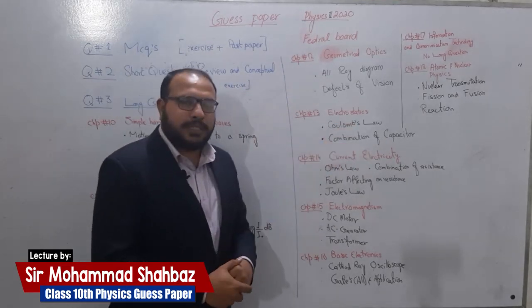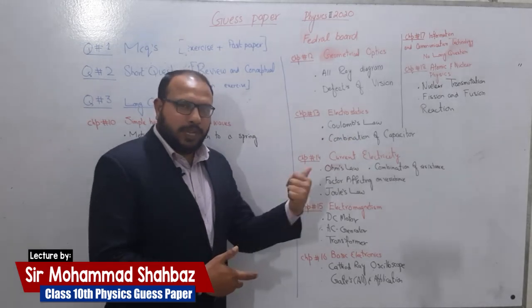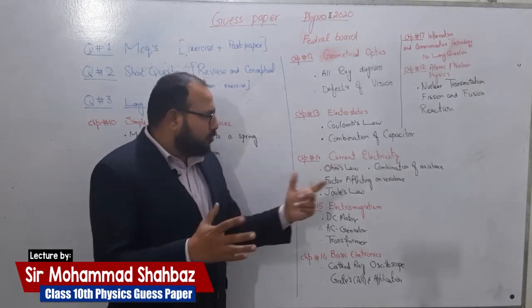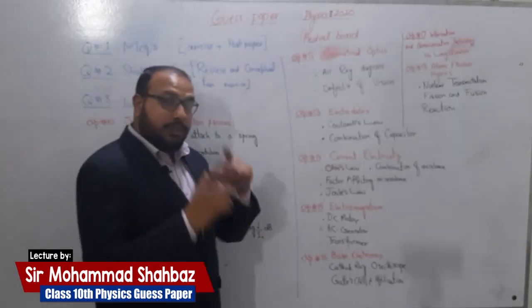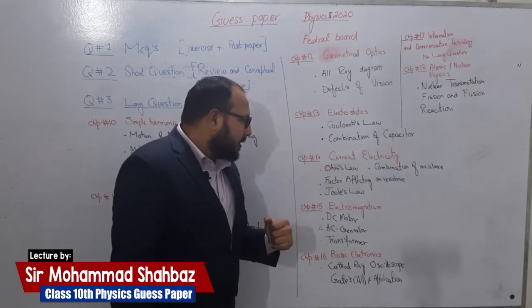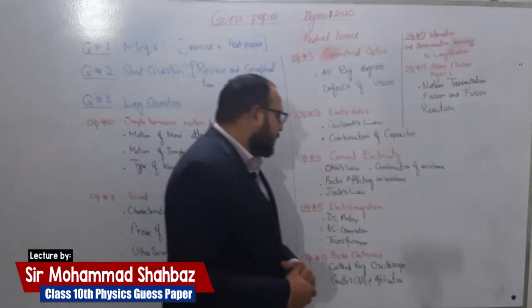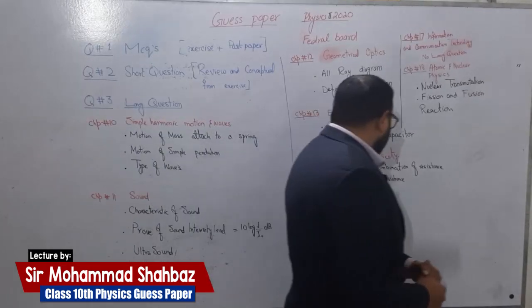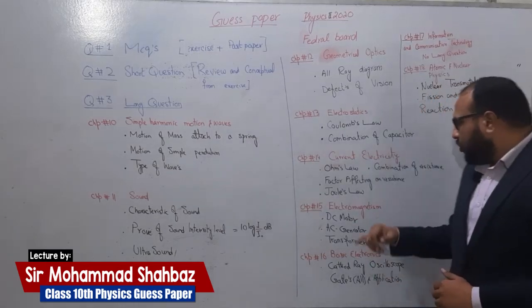Now let's move on to Electrostatics. This is also very important. Coulomb's Law and the combination of capacitors are the key parts. If you cover these two, you are 100% done with this chapter for the long questions.